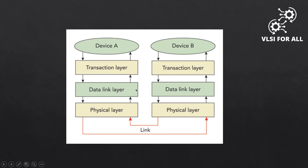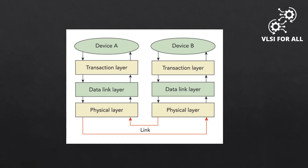After the data link layer, the link moves to the transaction layer — the main layer — where the TLP, Transaction Layer Packet, is generated. The TLP contains control and data fields; the actual data being sent to the receiver is handled in the transaction layer.